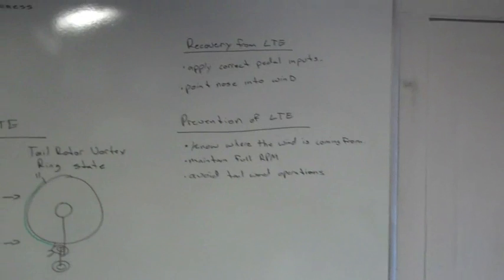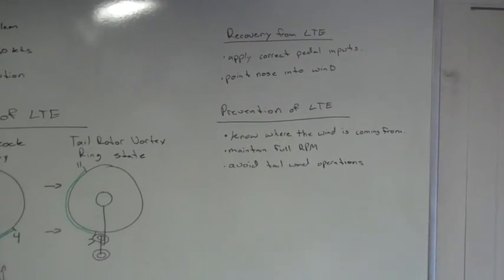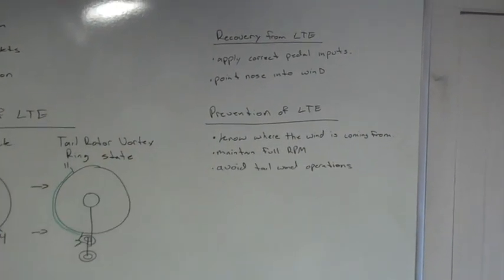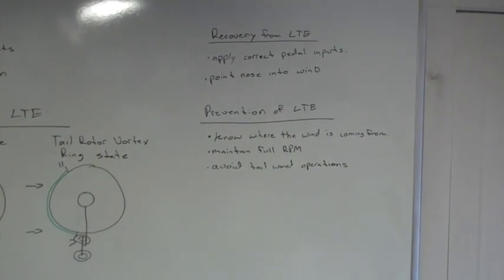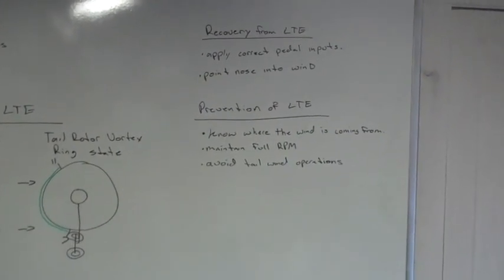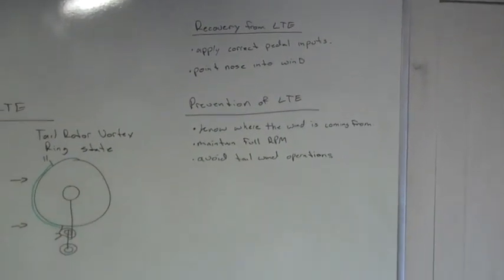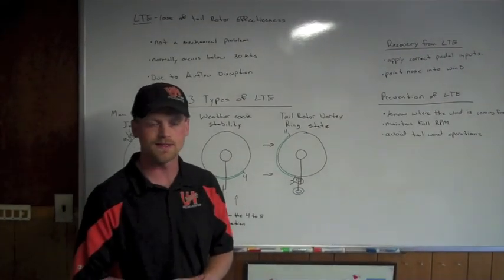To prevent LTE in the first place, you always want to know where your winds are coming from on final approach, so that you know if you're going to be subject to this or not. Always maintain full RPM. You want to keep your RPM right in the green arc, because that allows for the tail rotor to create its maximum amount of thrust. And avoid tailwind operations in a hover, if at all possible. Sometimes it's not, and we just have to learn how to deal with LTE.